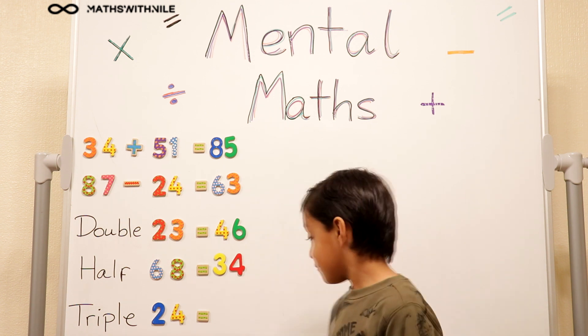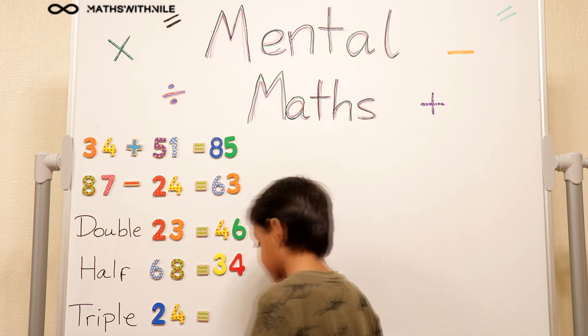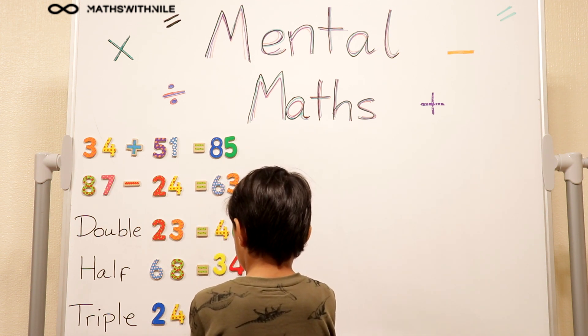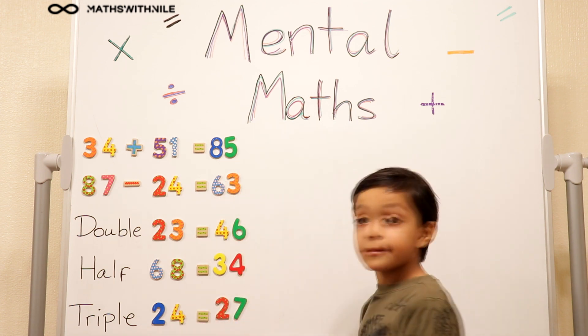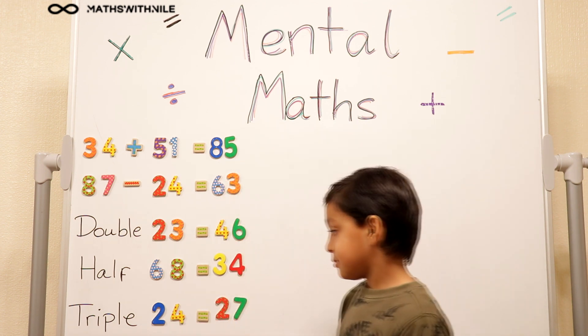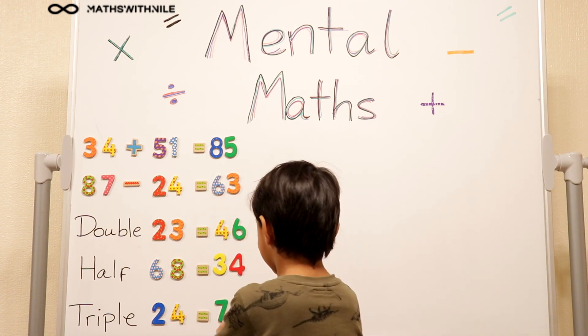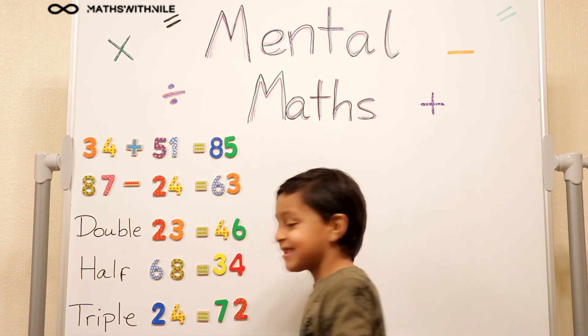Very good, Niall. So put the answer on the board. So triple 20 is 60, triple 4 is 12. So we add them together. And it's not 27. Oh. 72. 72. Okay, brilliant.